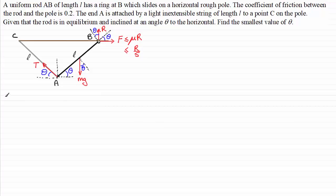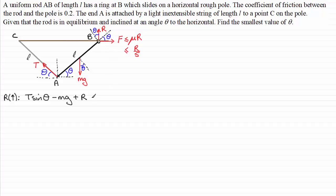Resolving vertically, taking upward as positive: the component of tension upward is T sin theta, the weight acts downward giving minus mg, and R acts upward giving plus R. The friction force is horizontal so it has no vertical component. Setting the resultant to zero for equilibrium gives T sin theta = mg minus R — that's equation 1.